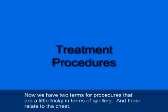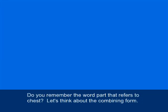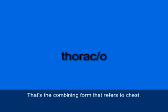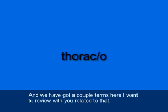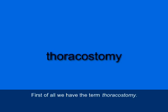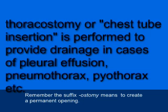Now we have two terms for chest procedures that are tricky in spelling. The combining form that refers to chest is thoraco (T-H-O-R-A-C slash O). The first term is thoracostomy (T-H-O-R-A-C-O-S-T-O-M-Y), which is an incision into the chest and the creation of a permanent opening. Remember, the suffix -ostomy means to create a permanent opening.